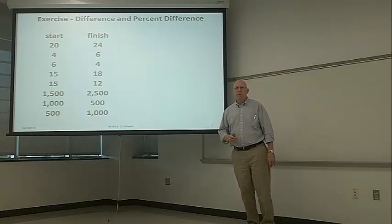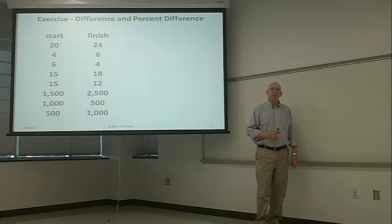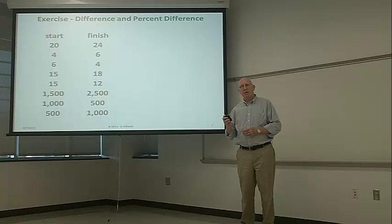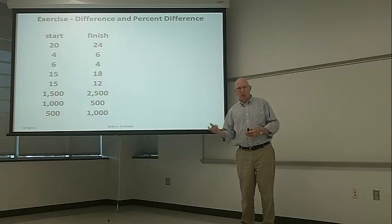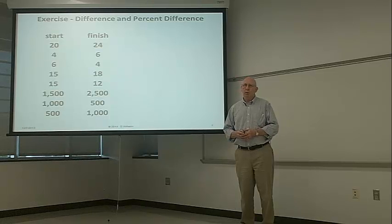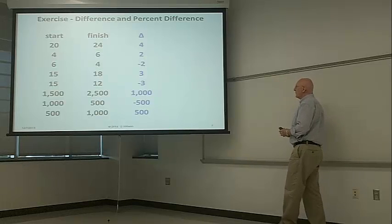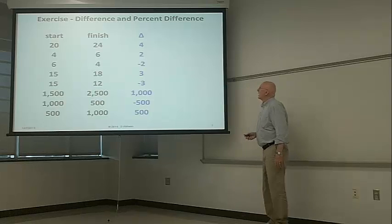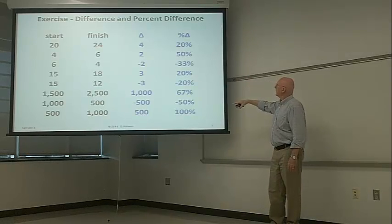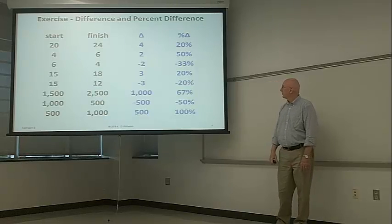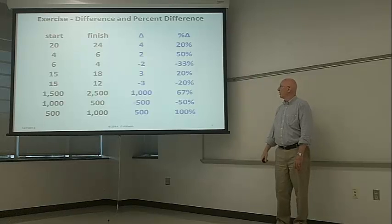Here's an exercise for you — please calculate the change and the percent change. Pause the video, jot the numbers down, do the calculations, then restart and check. The deltas are: 4, 2, minus 2, 3, minus 3, 1000, minus 500, and plus 500. The percent changes in percent are: 20, 50, minus 33, 20, minus 20, 67, 50, minus 50, and 100%. Change or delta, percent change or percent delta.